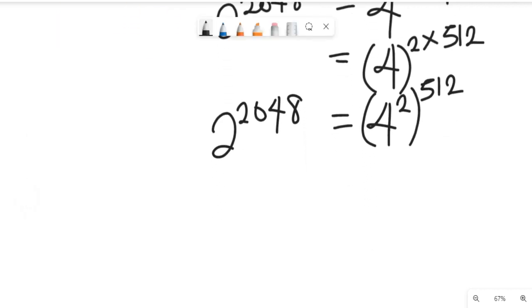So if we simplify that, we can simply have this to be equal to 16 to the power of 512. And that means 2 to the power of 2048 can still be equal to 16 to the power of 512.